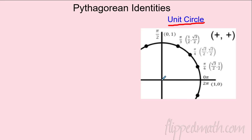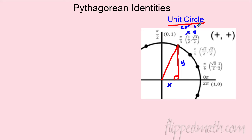Let's start with the most famous one: the Pythagorean identity. Let's draw one of our special triangles — say pi over three. We go over x and up y to make coordinates, and those special values are just cosine and sine. The x value is the cosine and the y value is the sine, because it's a unit circle with radius one.